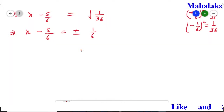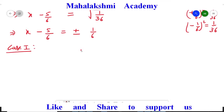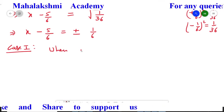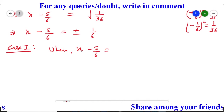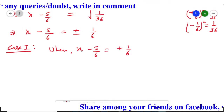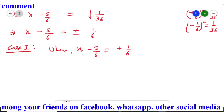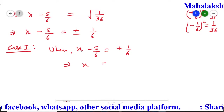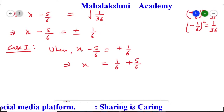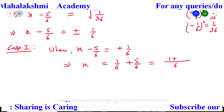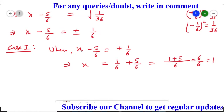In case one, we take x - 5/6 = +1/6. Shifting -5/6 to the right gives x = 1/6 + 5/6. Taking LCM of 6, we get (1+5)/6 = 6/6 = 1. So x = 1.